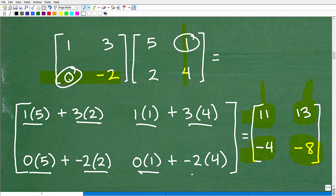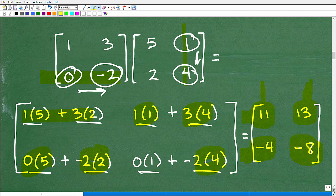So negative 2 times 4 is negative 2 times 4 right there. And now we simply clean this up. So 5 plus 6 is 11, and then we've got 1 plus 12 is 13, and 0 plus a negative 4 is negative 4, and this is 0, and this is negative 8. And there we go. So there is the product of those 2 by 2 matrices. And this procedure is how you do matrix multiplication for any matrices.